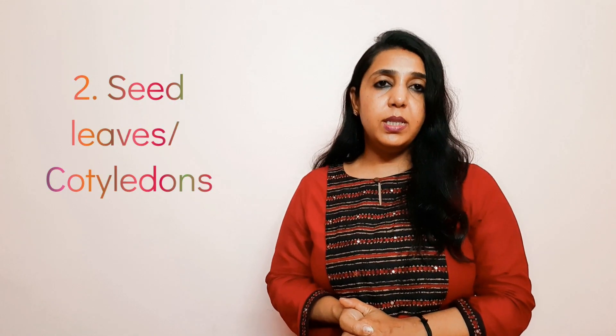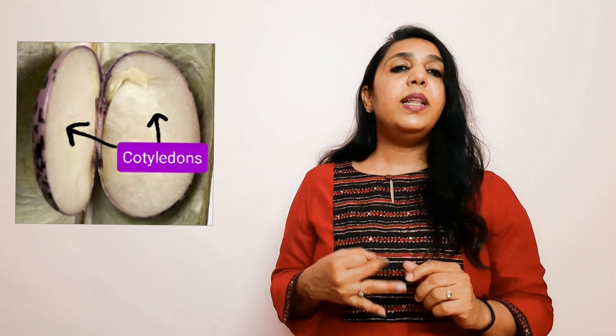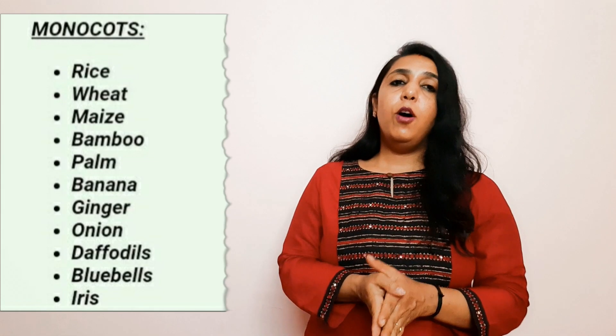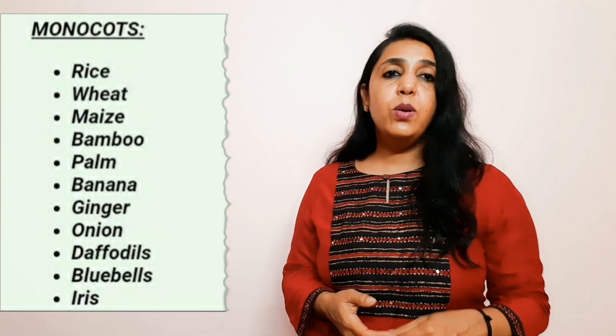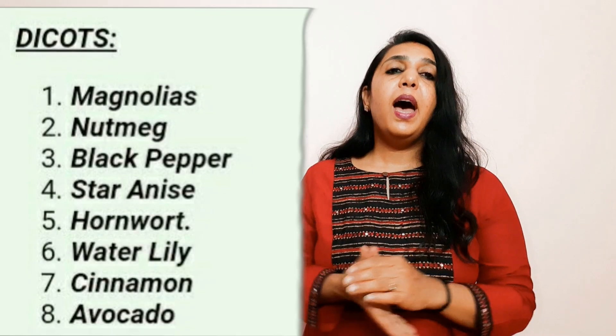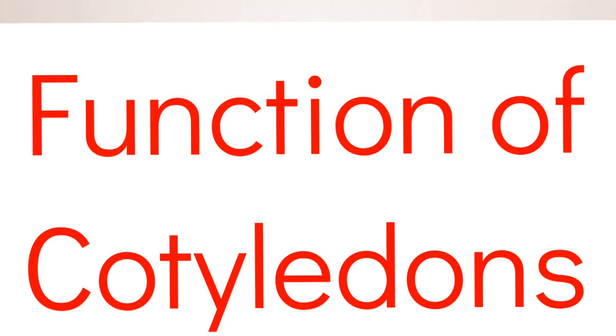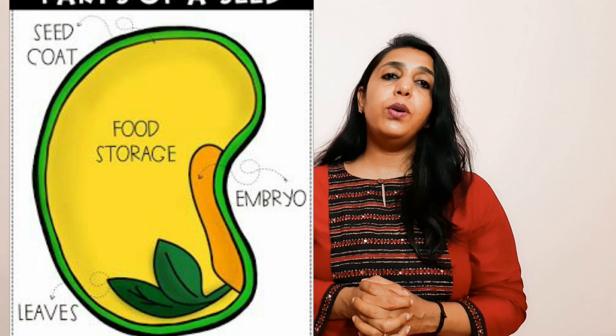The next part is seed leaves, which we call cotyledons. There are certain seeds which have one cotyledon and certain seeds which have two cotyledons. Seeds with one cotyledon are called monocot seeds, and seeds with two cotyledons are called dicot seeds. Corn, rice, and wheat are monocot seeds, while gram, beans, and peas are dicots. Cotyledons provide nutrition to the growing seed — they have food stored in them.